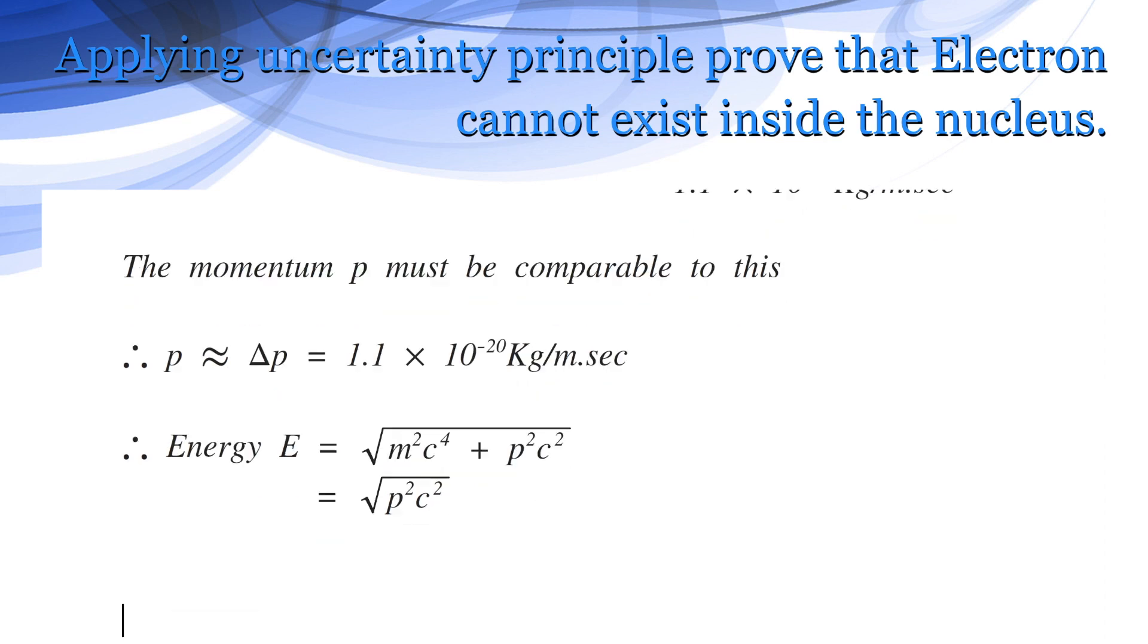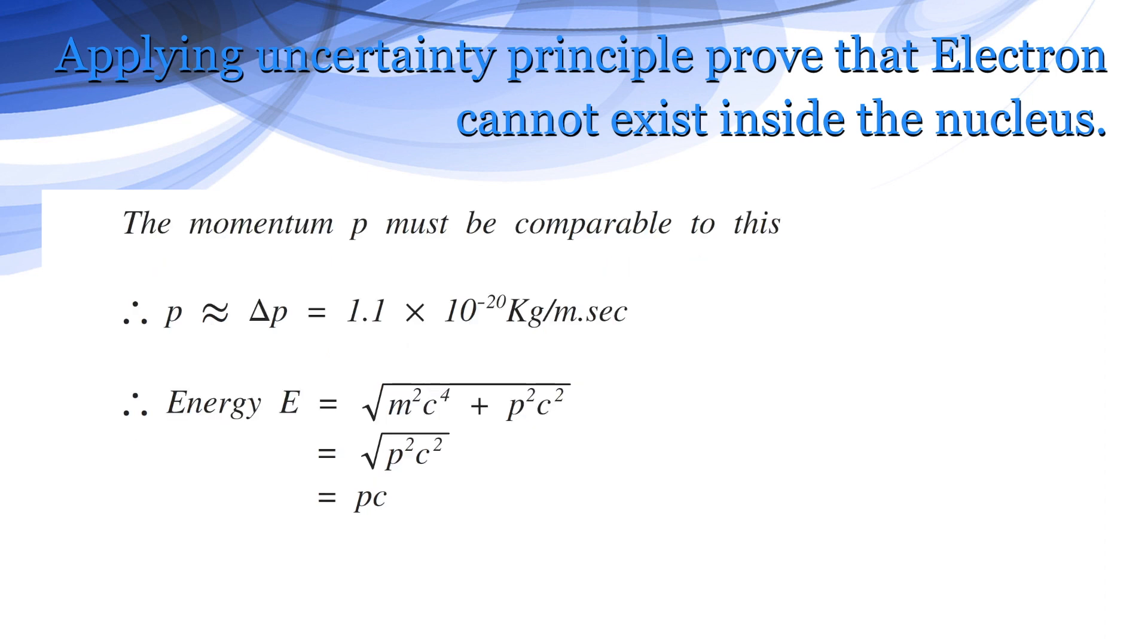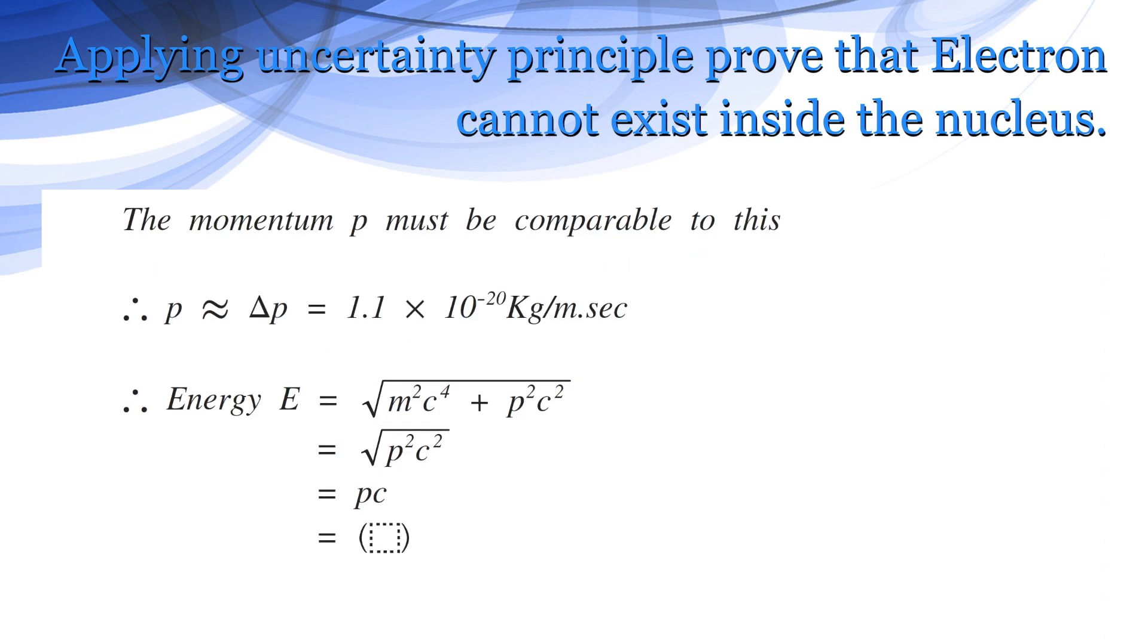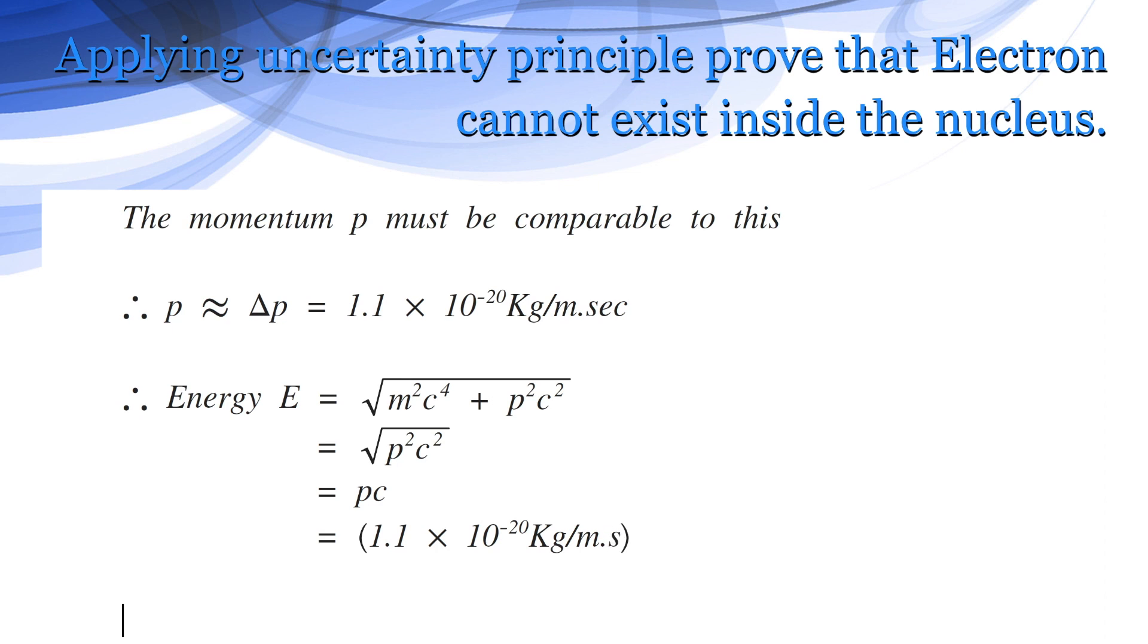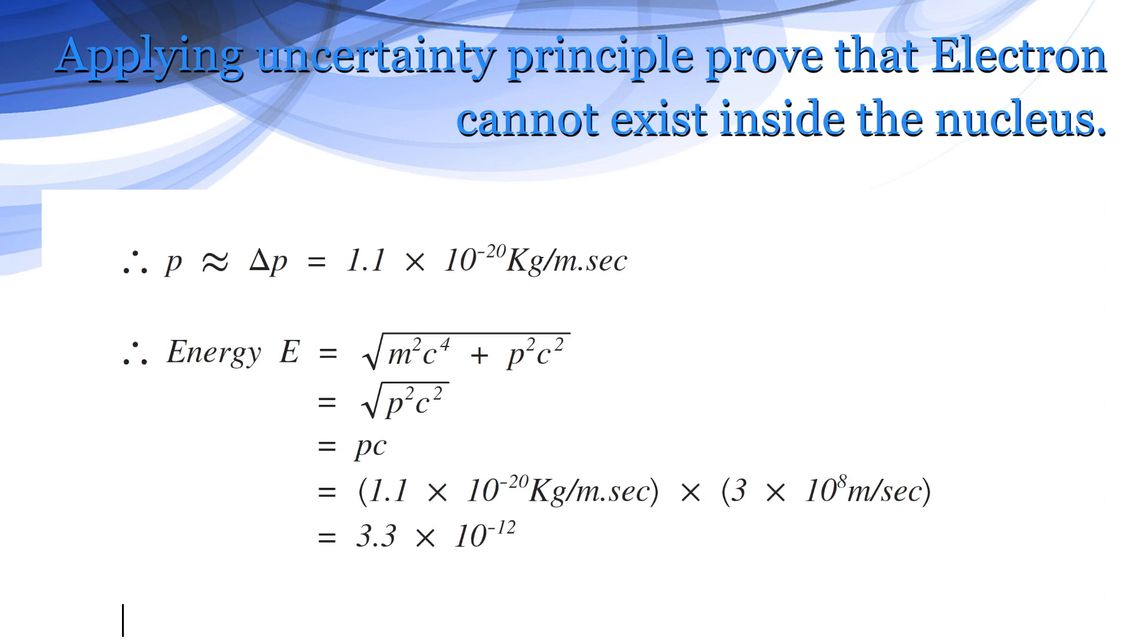So it becomes square root of p square c square, or equals p into c. Let's put the values: 1.1 into 10 to the power minus 20 kilogram per meter second into 3 into 10 to the power 8 meter per second, which comes to 3.3 into 10 to the power minus 12 joules.